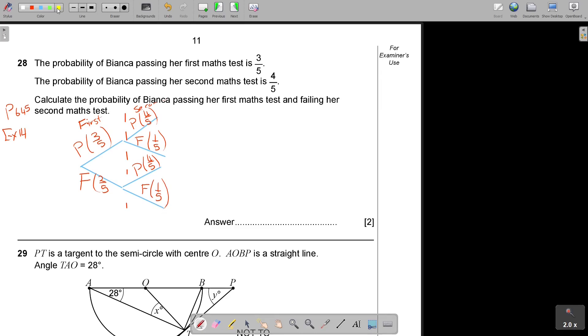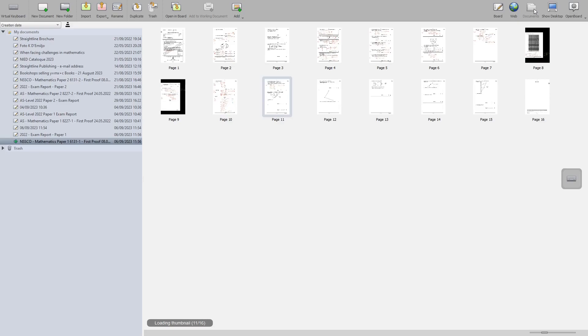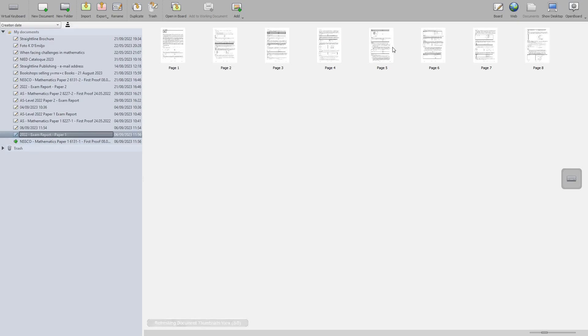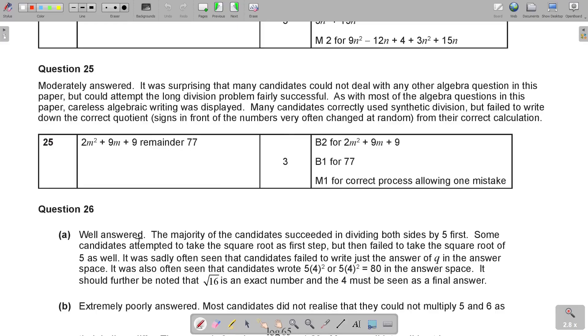And now, I'm going to look. So, if I'm going to check now, I'm going to say, calculate the probability of Bianca passing her first maths test, so she's passing the first, and failing her second maths test. So, it's going to be this branch. So, basically, I'm going to say 3 over 5. I'm just going to go back to my pen. It's 3 over 5, multiply 1 over 5, and that's going to be 3 over 25. And write it in your space. So, use a tree diagram. It's really going to help you. And if I go back, if I go back to the report, and I just look at question number 28.